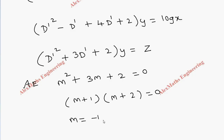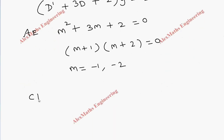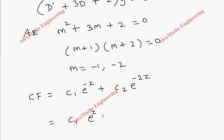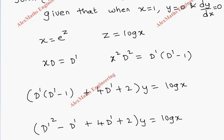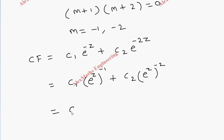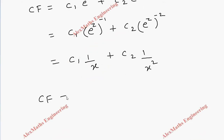Using these two values we write the complementary function: C1·e power minus z plus C2·e power minus 2z. Replacing back in terms of x, since z equals log x, this becomes C1·x power minus 1 plus C2·x power minus 2, which is C1 over x plus C2 over x squared. So the complementary function is C1/x plus C2/x squared.